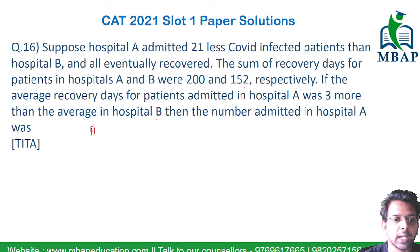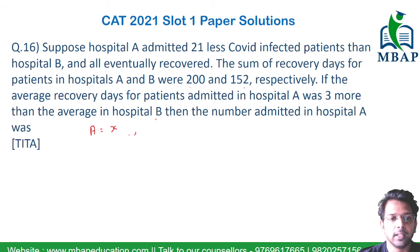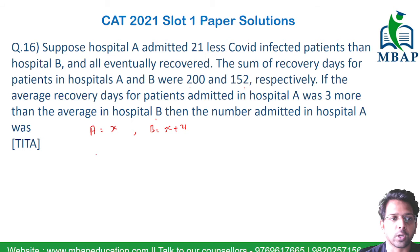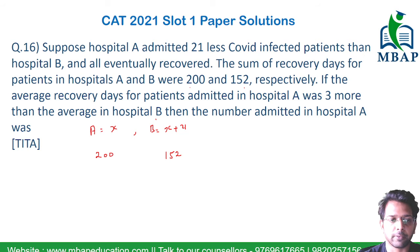If I assume the number of COVID patients admitted in hospital A is X, then the number of patients in hospital B would be X plus 21. It is also given that the total recovery days for A is 200 and for B is 152.